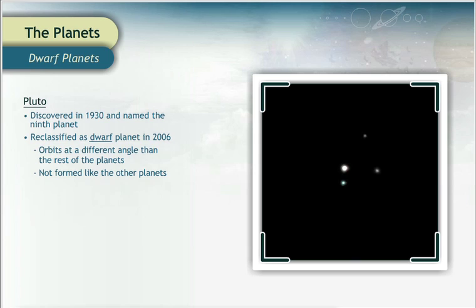Pluto has three moons. Its main moon is half the diameter of the dwarf planet itself.